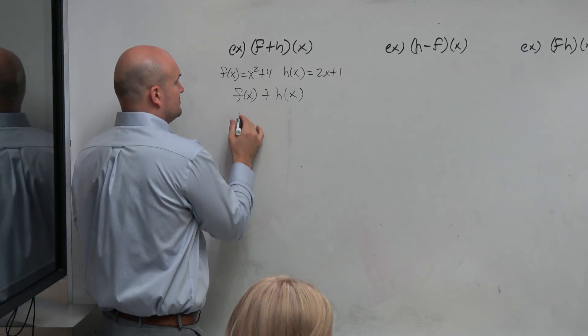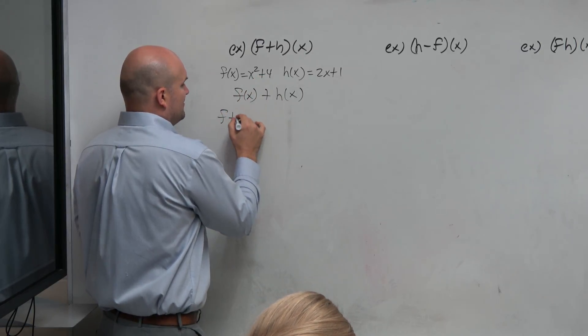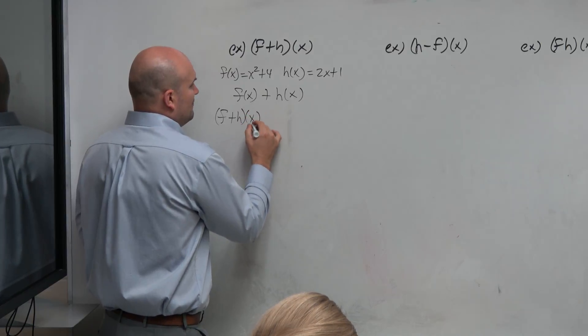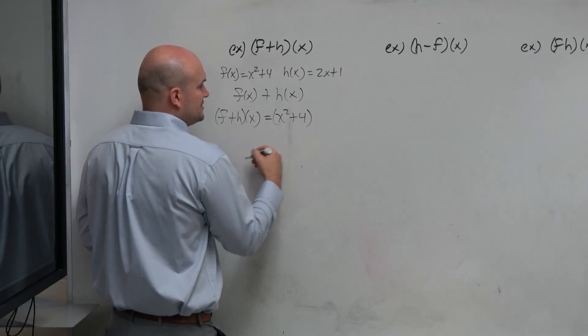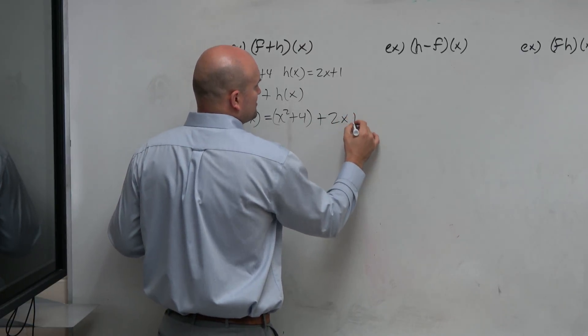So we could say f plus h of x is equal to f of x, which is x squared plus 4. You could put it in parentheses if you needed to. And then plus 2x plus 1.